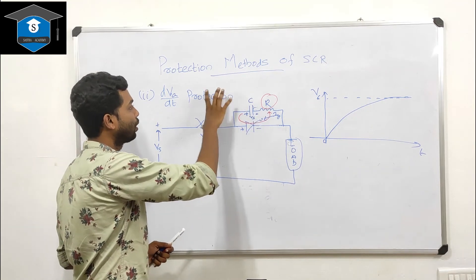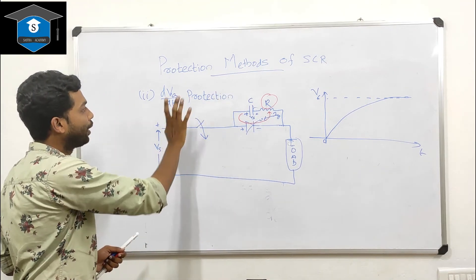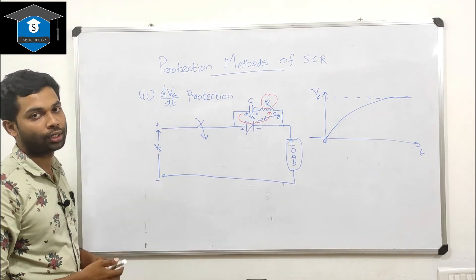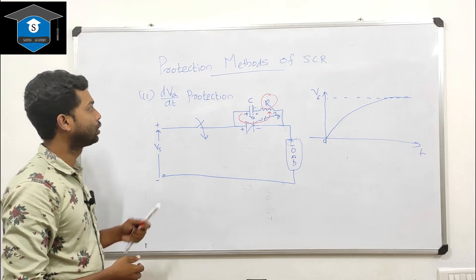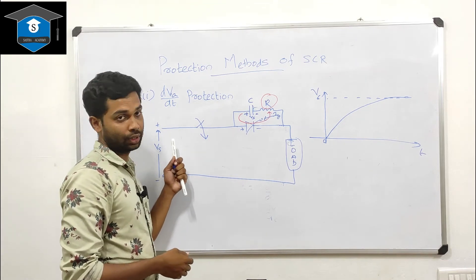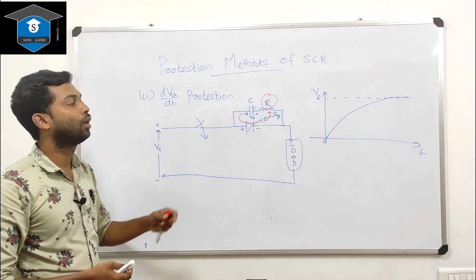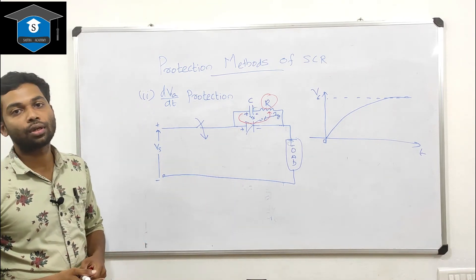The snubber circuit protects the SCR from high dv/dt. This is the dv/dt protection method for the SCR using a snubber circuit.